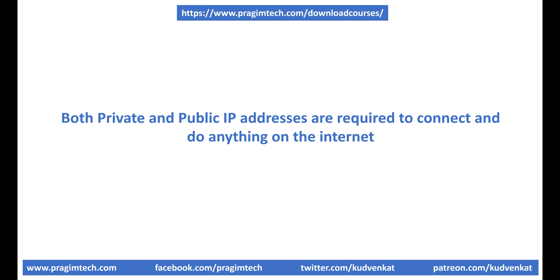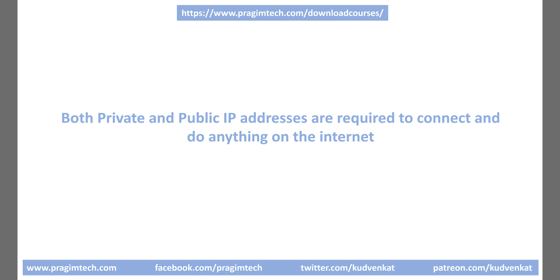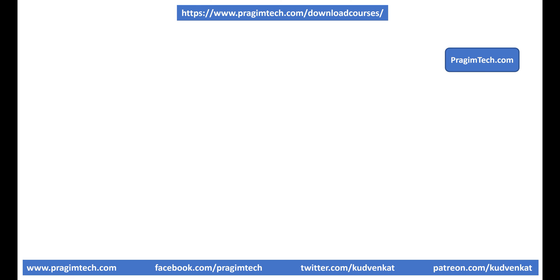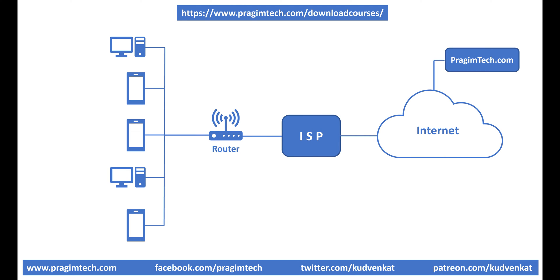We need both private and public IP addresses to connect and do anything on the internet. For example, when you fire up your favorite browser like Google Chrome and navigate to pragimtech.com, how does the internet know it has to deliver the content from that website to your laptop and not to someone else's laptop or phone in your office or home network? This is made possible by public and private IP addresses working together.